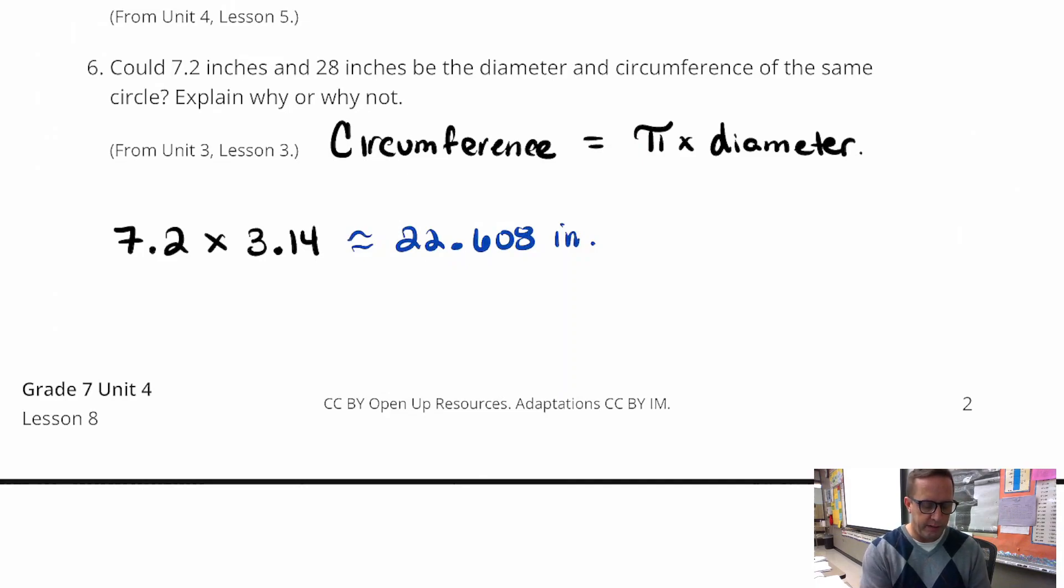And if I do 28 divided by pi, I get like 8.9. So we'd probably want a number here that was closer to 8.9 because that would give us a circumference that's pretty close to 28 or at least not very far.